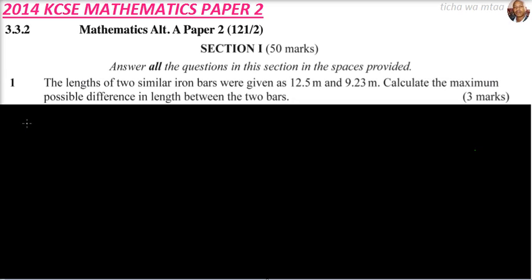So this is the first question. We are told the length of two similar iron bars were 12.5 meters and 9.23 meters. Calculate the maximum possible difference in length between the two bars.